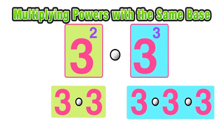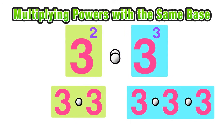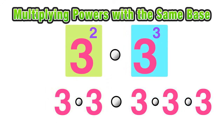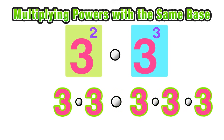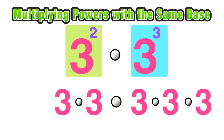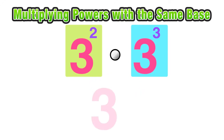We're multiplying each of these two things together. Notice that we have 3 being multiplied by itself 5 times. Another way of saying this is 3 to the fifth power, or 3 to the power of 5.